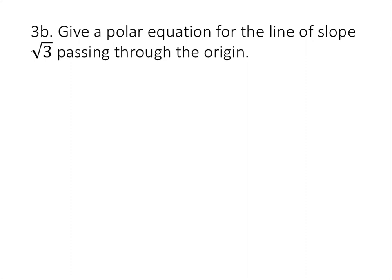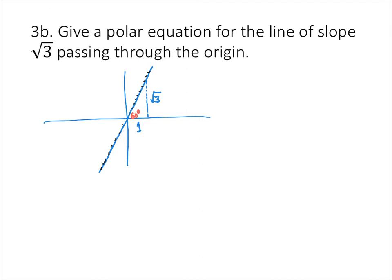A line passing through the origin is also relatively easy to describe in polar coordinates. If the slope is √3, we can think of a triangle with height √3 and base 1. Using trigonometry, that angle is 60° = π/3. All points on this line have a θ value of π/3, so the polar equation is θ = π/3.